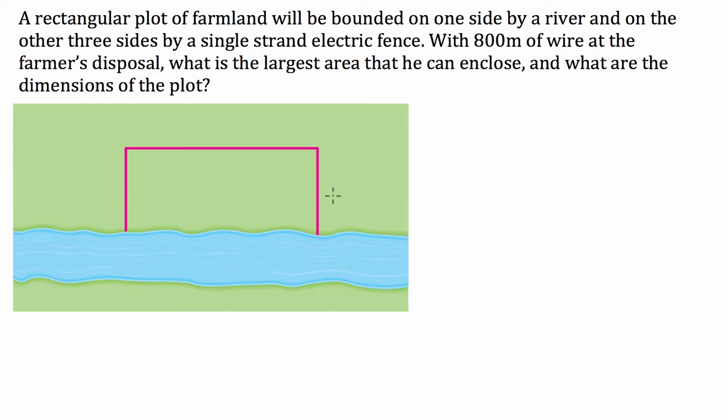Hi guys, we've got an applications of differentiation question here. The question says that we've got a rectangular plot of farmland will be bounded on one side by a river and on the other three sides by a single strand electric fence. With 800 metres of wire at the farmer's disposal, what is the largest area that he can enclose and what are the dimensions of the plot?